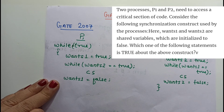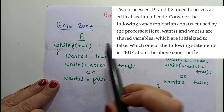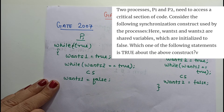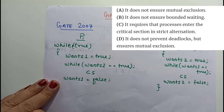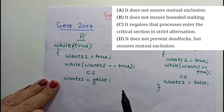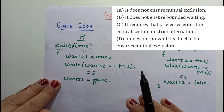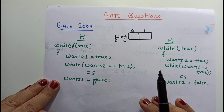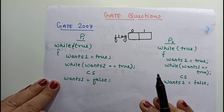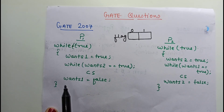We have to find out which statement is true about the above construct. The options are: it does not ensure mutual exclusion; it requires processes to enter the critical section in strict alternation; it does not prevent deadlocks but ensures mutual exclusion. Let's see which one is correct. This is actually based on the last algorithm, so if you have seen that video you can easily solve this question.